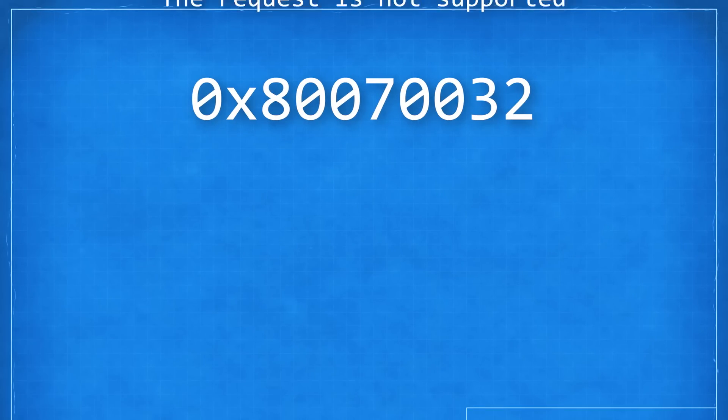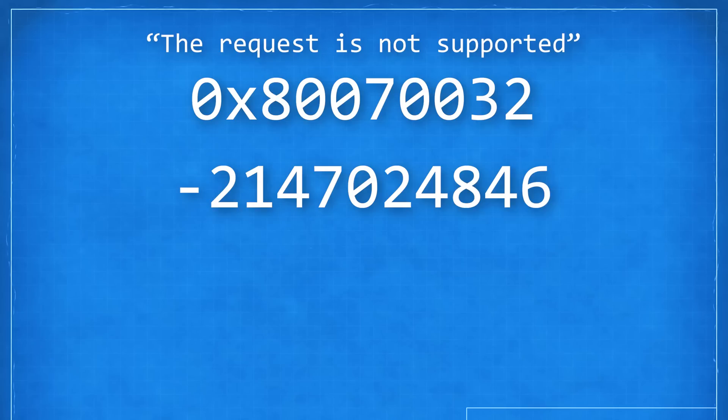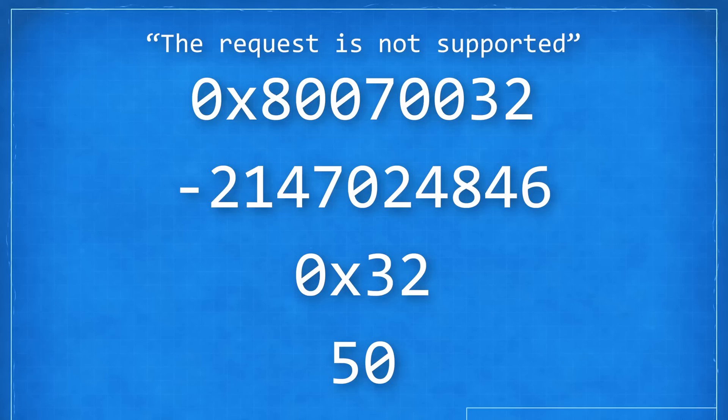So let me quickly explain that so you know what you're looking at. And don't worry, it's surprisingly simple. Take for example, this scary looking error code from the event viewer. The meaning isn't important here, but if you're curious, it means the request is not supported. And here are three more ways of representing this same error code. But hold on, this is not actually nearly as complicated as it looks. Let's break it down.